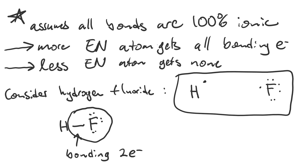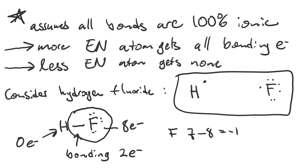So the fluorine has eight electrons and the hydrogen has zero electrons. What does that mean for their oxidation number? Fluorine should have seven but it has eight. Each electron has a charge of minus one. So fluorine: seven minus eight equals minus one. Hydrogen should have one, but it has zero. One minus zero equals plus one.